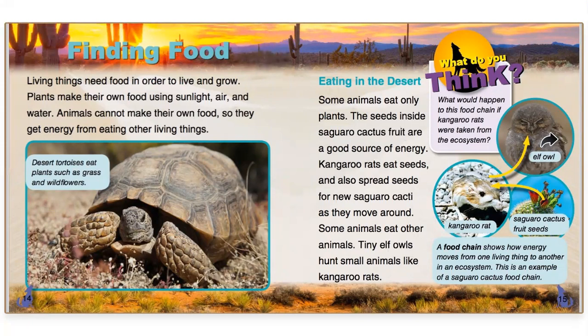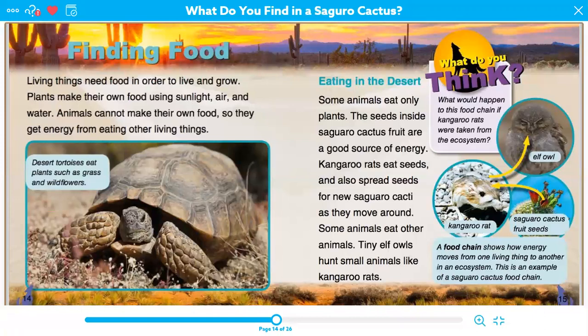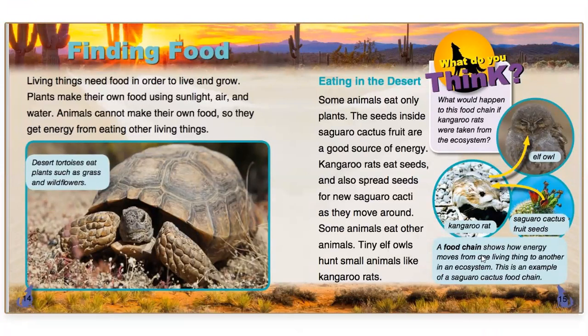Finding food. Living things need food in order to live and grow. Plants make their own food using sunlight, air, and water. Animals cannot make their own food, so they get energy from eating other living things. Some animals eat only plants — the seeds inside the saguaro cactus fruits are a good source of energy. Kangaroo rats eat seeds and also spread seeds for new saguaro cacti as they move around. Some animals eat other animals; tiny elf owls hunt small animals like kangaroo rats. A food chain shows how energy moves from one living thing to another in an ecosystem. Here is a great example of a saguaro cactus food chain.